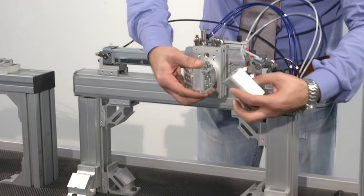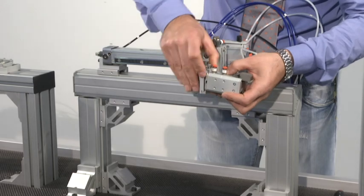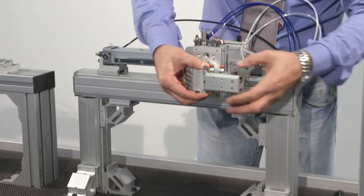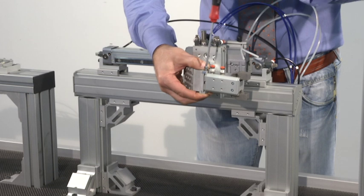Now we are going to remount the previous gripper, which will be rotated through 90 degrees. To secure it, just tighten the same two screws as before.